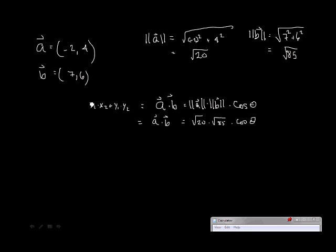Now, if this is x1 and if this is y1 and this is x2 and this is y2 then the scalar product is negative 2 times 7 plus 4 times 6. And that's minus 14 plus 24. And that gives us 10.